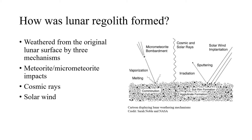The final primary weathering mechanism is solar wind. The plasma of charged particles flowing from the sun can radiate the outer 50 to 100 nanometers of a grain, causing the mineral to break down to an amorphous state. Solar wind particles, largely composed of hydrogen and helium but also heavier elements, can become embedded in the soil particles. Solar wind ions can also knock individual atoms out of place in a process called sputtering, and these atoms will either be lost to space or redeposited on nearby grains.